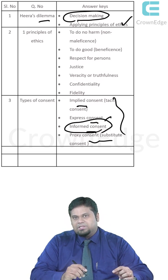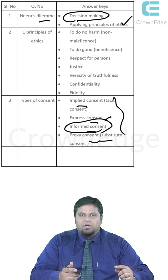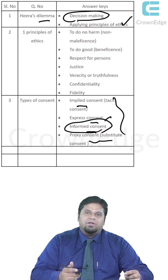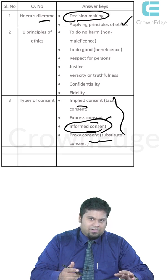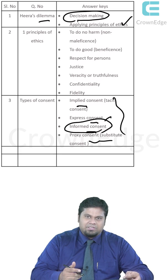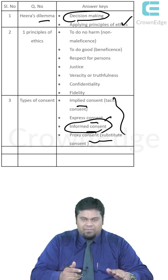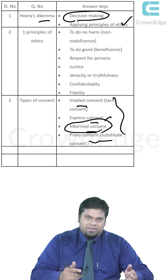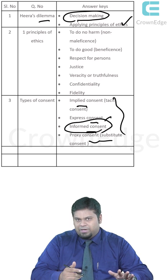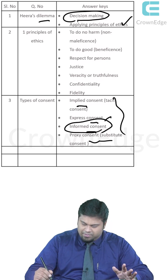Proxy consent, also called substitute consent, is used when the patient is not in a condition to consent — for example, in an emergency, or when the patient is a minor where parents can give consent below a certain age of 13 or 14 years.